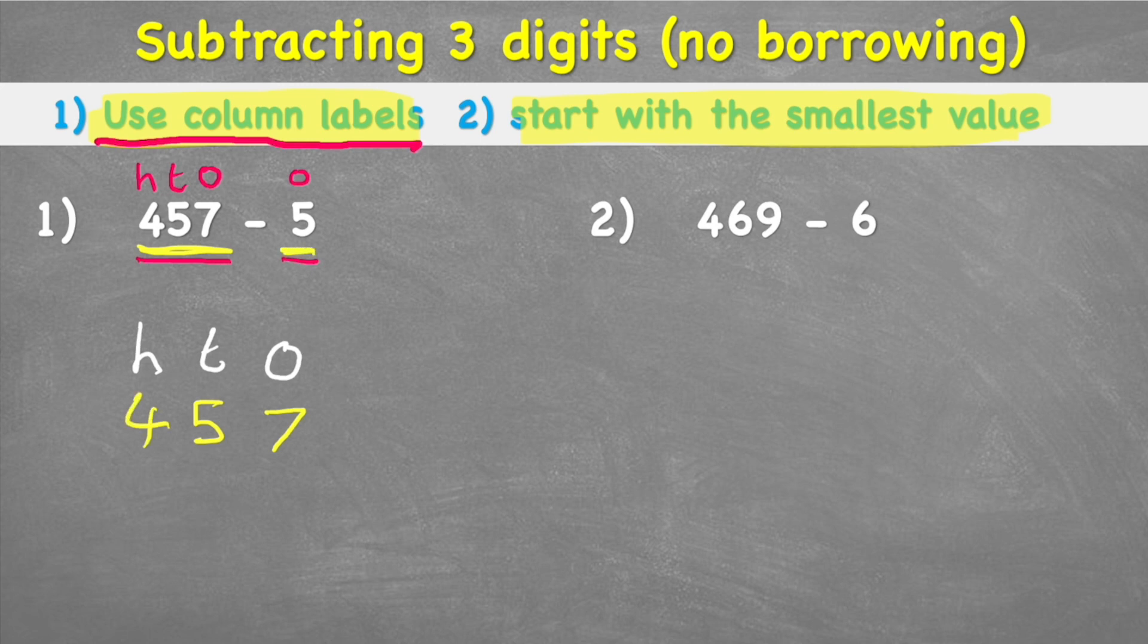So I have 457 which we said had seven ones, so I put my seven in the ones column, five tens and four hundreds. Then my second number, the five, only has a five in the ones column and nothing in the tens or the hundreds. So I could actually put my zero here to show that there's nothing, and I'm putting in this sort of dotted line because we're going to call that a placeholder. It's not actually in our question but it's a zero that should be there.